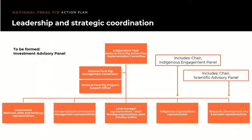While the plan hasn't been formally endorsed, we are getting on with implementing it. Our governance structures are now being bedded down. Our implementation committee meets around every six weeks at the moment, and these meetings commenced in late May. This committee has representatives from across a diverse stakeholder base impacted by feral pigs, selected through a formal expressions of interest process. We've also formed a Scientific Advisory Panel and an Indigenous Advisory Panel, and we're in the process of getting an Investment Advisory Panel up and going. More details can be found on our website, feralpigs.com.au.